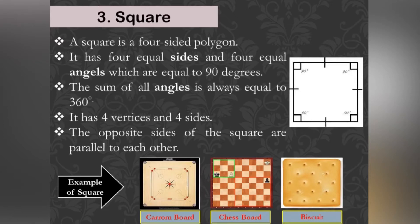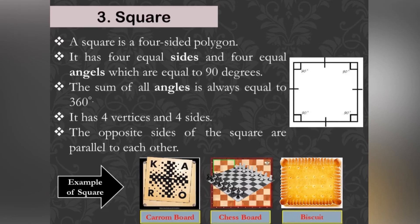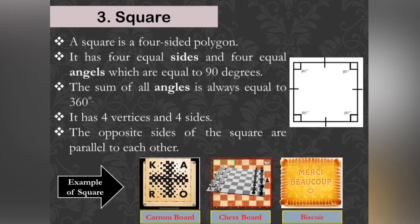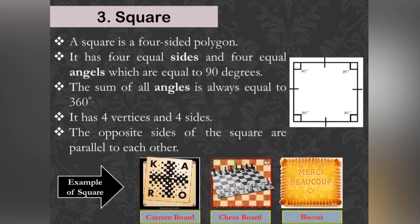The opposite sides of the square are parallel to each other. Examples of the square are carom board, chess board, square-shaped biscuit, clock, etc.